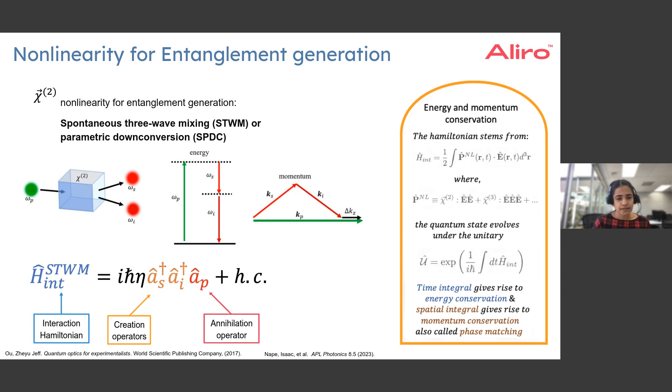You will see that it consists of creation operators which are essentially saying that we have one signal photon and one idler photon that can be generated, and an annihilation operator for the pump which is saying that one pump photon is consumed in this process.